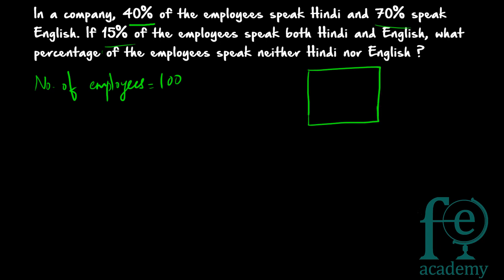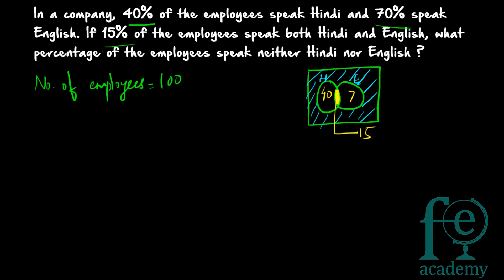With total employees = 100, some people speak neither Hindi nor English, so there is a square representing all 100 employees, with two circles inside — one for Hindi and one for English. The blue region outside both circles represents employees speaking neither language, which is what we need to find. Hindi circle = 40, English circle = 70, overlap = 15.